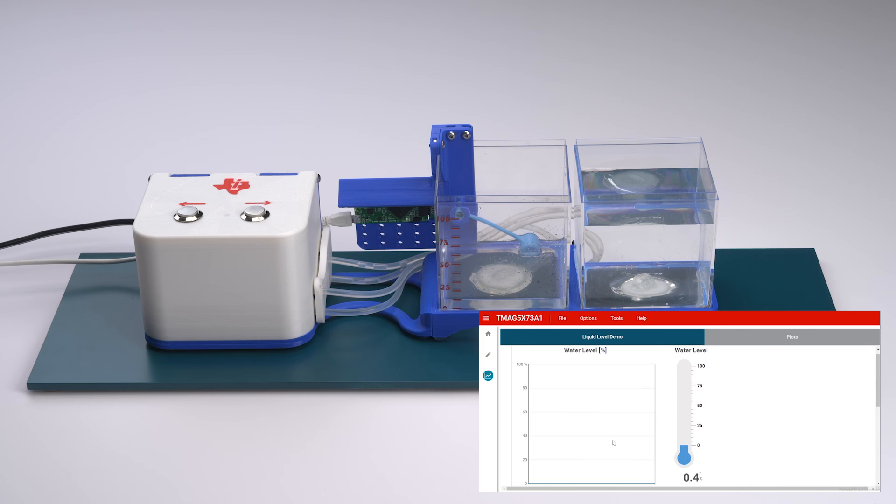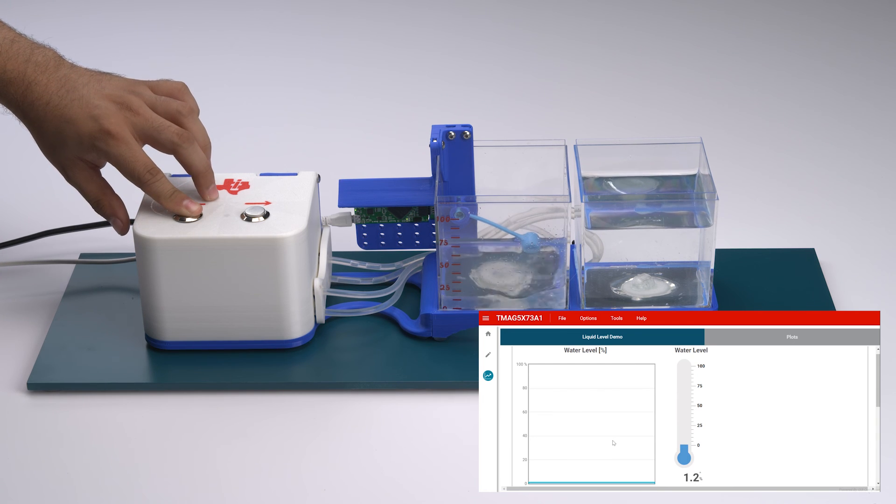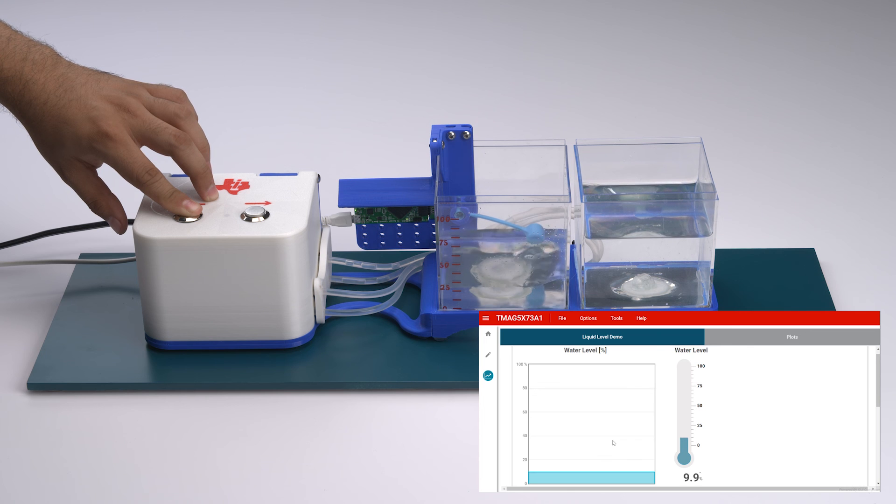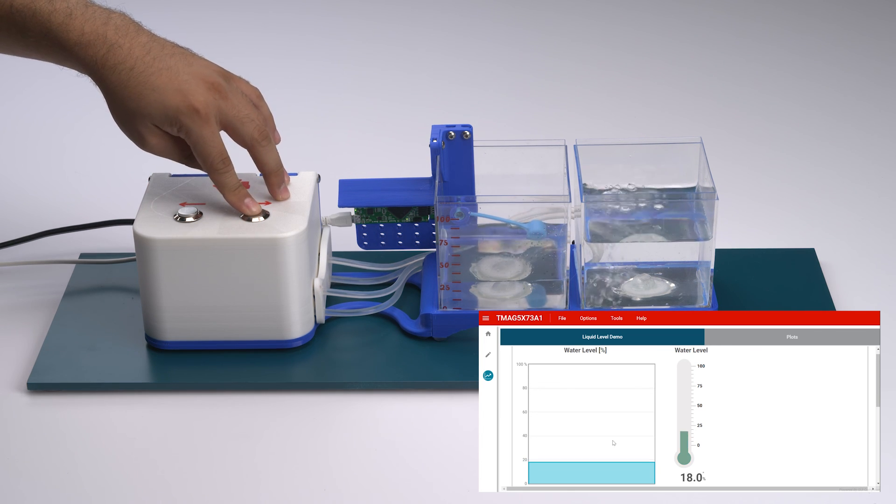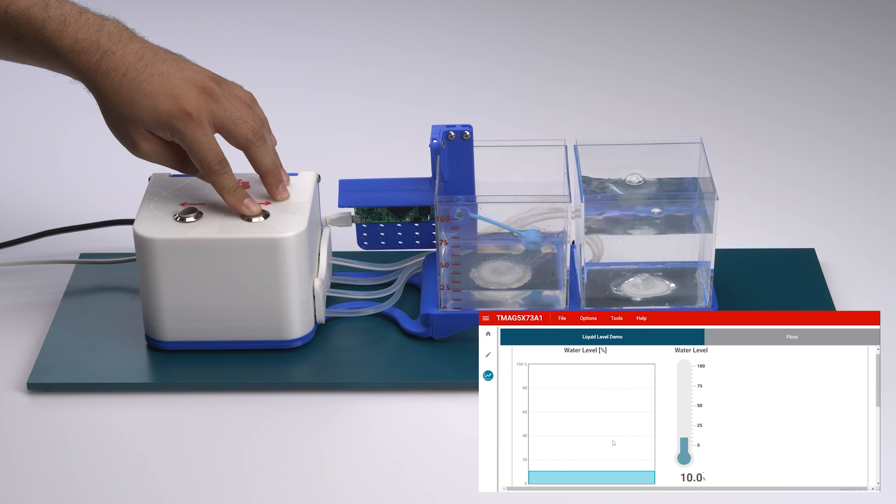By pushing the left arrow, we can move the water from the right tank to the left tank. And by selecting the right arrow, we can move the water from the left tank back into the right tank. As we introduce more water into the left tank, we can see that the float arm rises along with the depiction of the water level in the GUI.